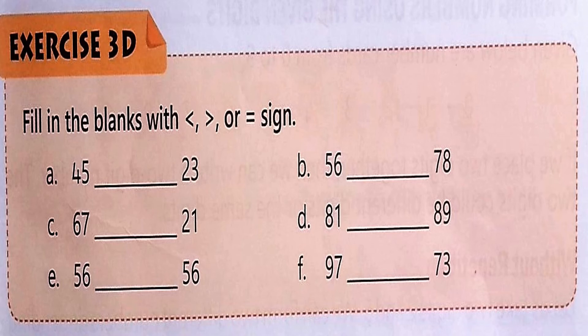Now let's do our exercise — fill in the blanks with the symbol smaller than, bigger than, or equal to. First: two two-digit numbers. The tens digits are 4 and 2, so 4 is bigger — the crocodile eats 45, meaning the mouth opens towards 45. Next, 56 and 78: the tens digits are 5 and 7, so 7 is bigger.